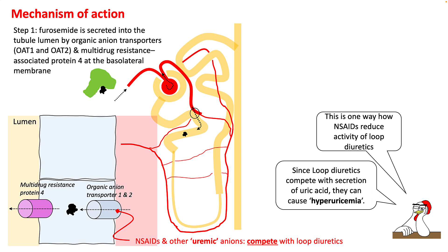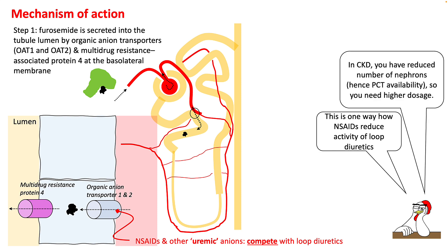This is also the reason why NSAIDs reduce the activity of loop diuretics — they compete with loops for their secretion in the proximal convoluted tubule. There are also other mechanisms by which NSAIDs reduce loop diuretic activity. In chronic kidney disease, you have a reduced number of nephrons, so you have limited OAT availability. Also, uremic anions compete with loop diuretics in their secretion in the proximal convoluted tubule, so you need higher doses for the same effect.